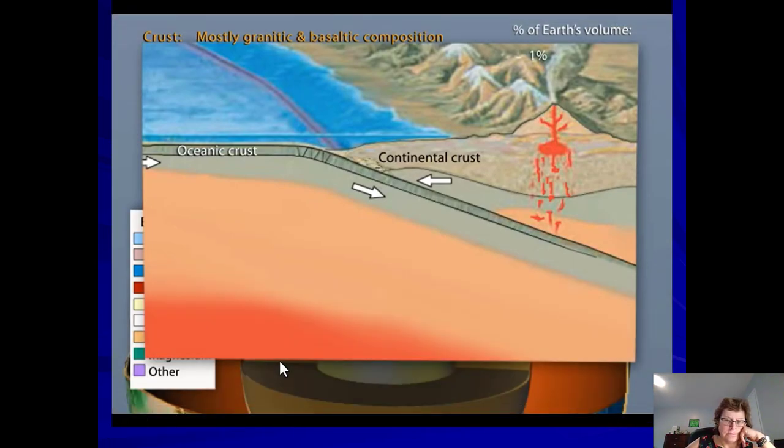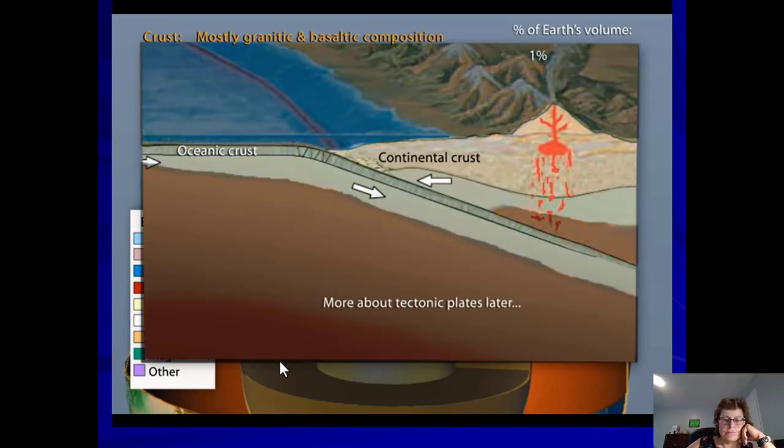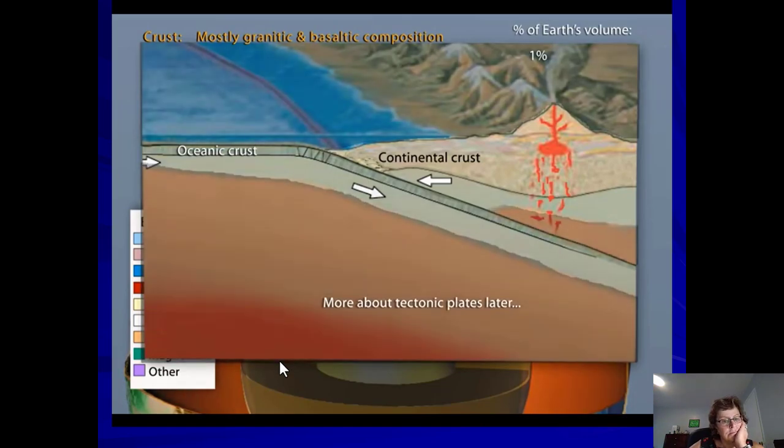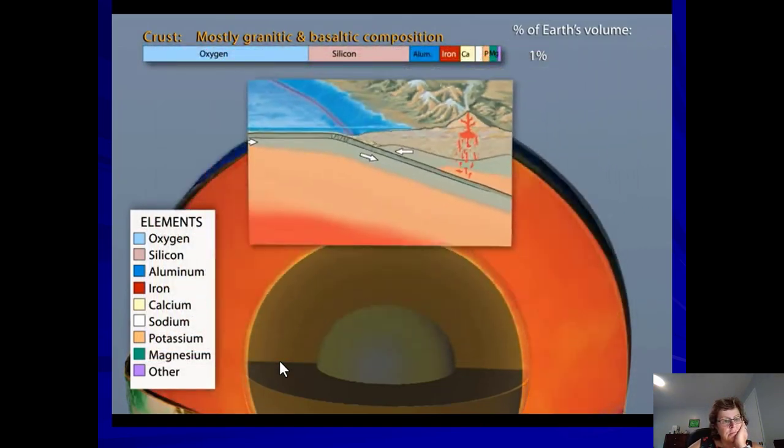The crust is often mistaken for the tectonic plates. However, the crust is just the top part of the tectonic plates. We'll return to the topic in a moment, but first back to the three layers.